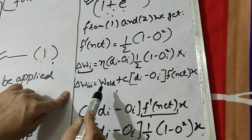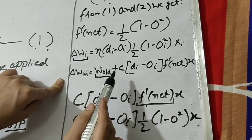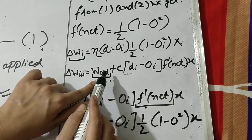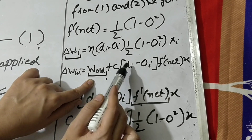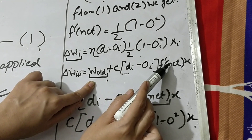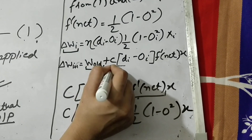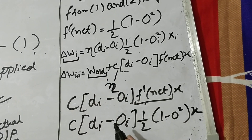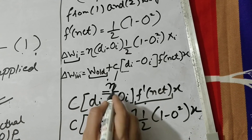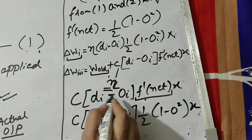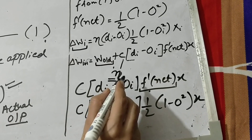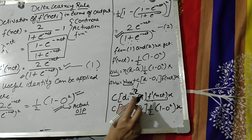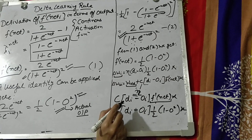This will also be multiplied with the learning constant: learning constant into (d_i minus o_i) times half of (1 minus o) squared into x. As I have told you in the general learning rule, you add your previous weight values to your new weight values. So: new weight = old weight plus c into (d_i minus o_i) multiplied with f'(net) into x. If no learning constant is given, use the default value of 1. This completes our delta learning rule step-by-step procedure, which you can apply in numerical problems.